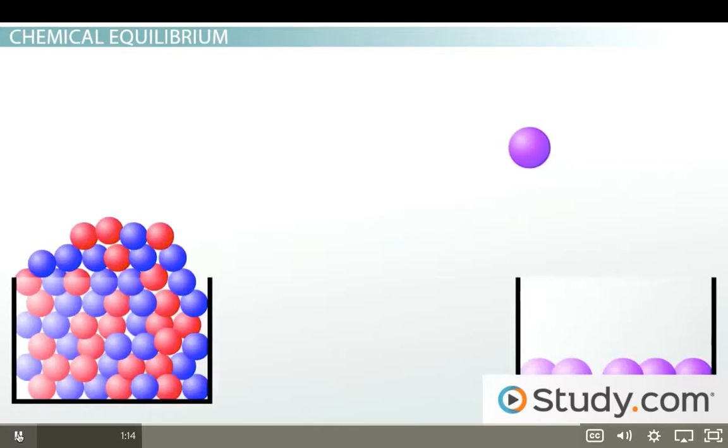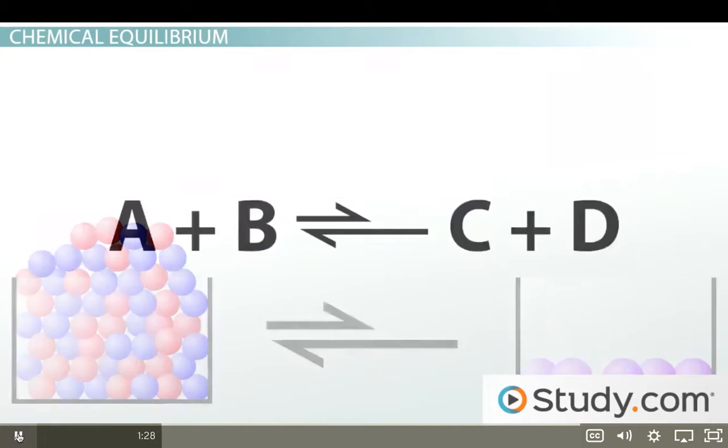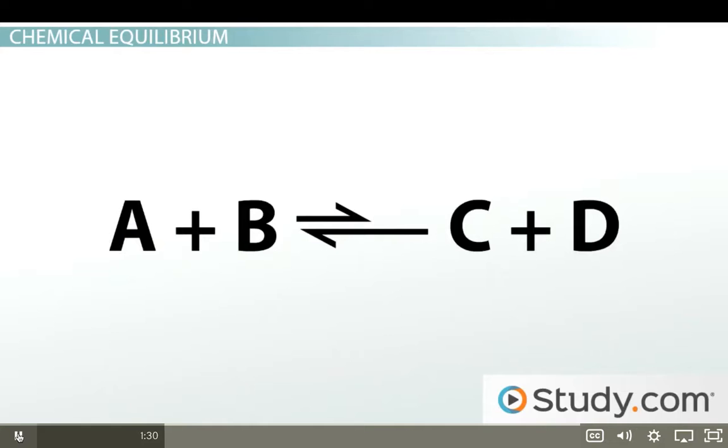The opposite is also true. The forward reaction of making products has barely started, and the reverse reaction is already going like gangbusters. In this case, the equilibrium of the reaction is said to lie to the left, and the longer arrow points left.